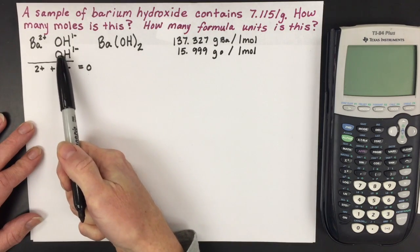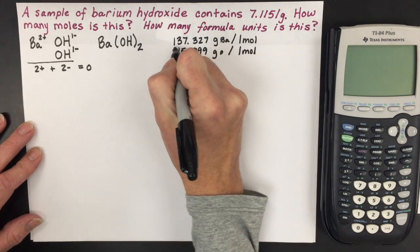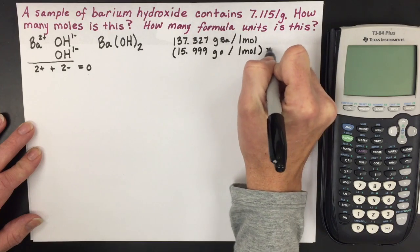However, in my formula, I have two oxygens, so that means I need to multiply that atomic mass by two.